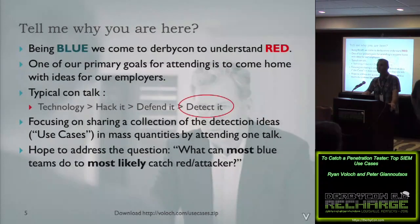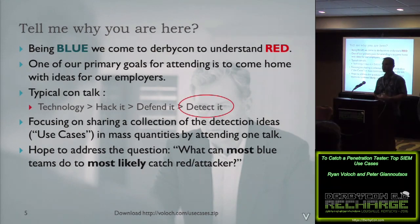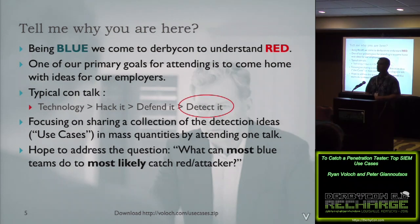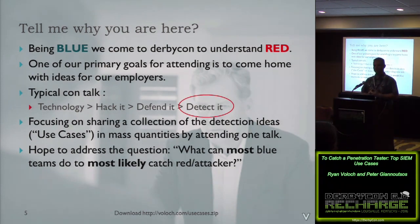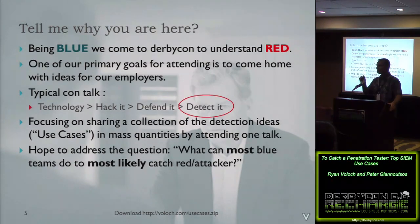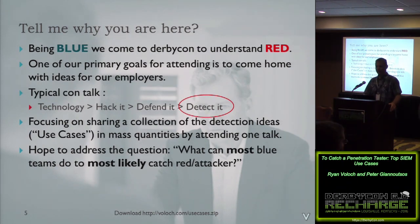So why are we here? Pete and I are very blue team, but we love coming to DerbyCon to understand what the red team is doing. When we go to an event like this, our goal is to come home with ideas for our organizations. We wanted to share what we love about cons like this. The typical DerbyCon talk explains a technology, hacks it, and defends it — but every time, there's a little bit of 'how do you detect it?' That's our focus today. We're sharing a collection of use cases in mass quantities, addressing: what can most blue teams do that will most likely catch red attackers in most environments?